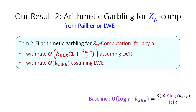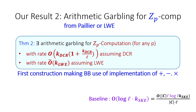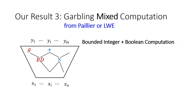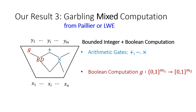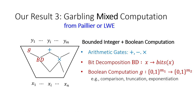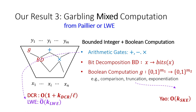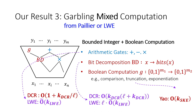Our second result is a garbling scheme for Z_p computation. We can have either rate O(κ_DCR) for large L, or rate O(κ_LWE). Our construction is the first garbling for Z_p computation that makes black-box use of the underlying ring operations. Our third result considers garbling circuits with both arithmetic gates and general Boolean computation gates, plus a bit decomposition gate for connecting the two types. We garble arithmetic gates at the rate from Theorem 1 and Boolean gates at Yao's rate.